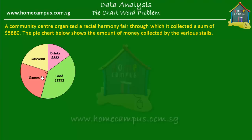We've got a pie chart here and each of these individual slices represents the amounts collected by each of the individual stalls. This is the slice for the drink stall and it tells us that the drink stall collected $882. The slice for the food stall is bigger than the drink stall's slice, and the food stall collected $2,352. The games and souvenir stalls — we don't know how much they collected but we'll find out later.